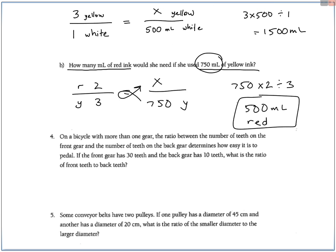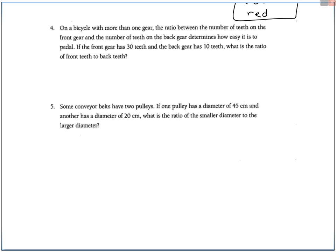Continuing on, let's go here to question four. On a bicycle with more than one gear, the ratio between the number of teeth on the front gear and the number of teeth on the back gear determines how easy it is to pedal. So I'll just highlight that, ratio front to back. This is what we're working on, the ratio of front to back. So if the front gear is 30 and the back gear is 10, so 30 to 10, front to back. What is the ratio of front to back? Well, they're not asking us to solve a proportion, they're just asking for the ratio. So 30 to 10, those numbers both divide by 10, you get 3 to 1. So this is the ratio, 3 to 1.